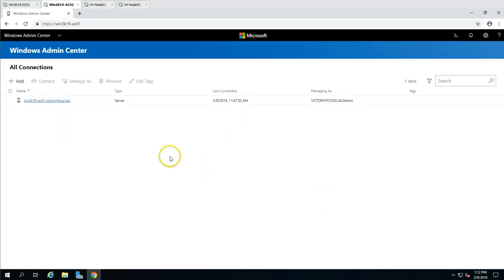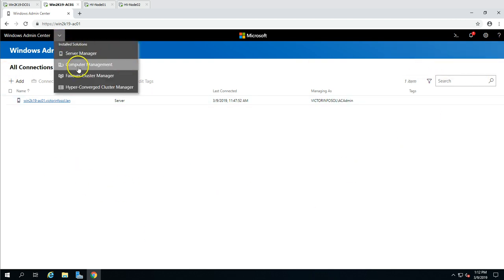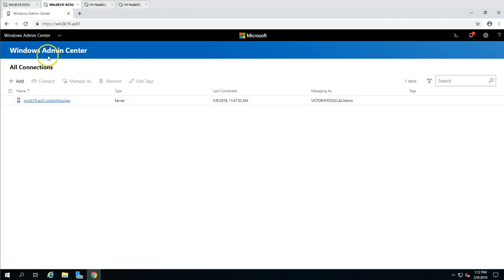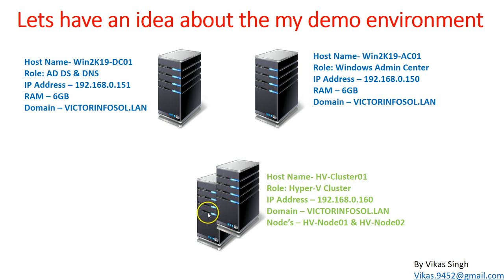I'm now connected to Windows Admin Center. From here we can manage computers and failover clusters, so we are going to add our Hyper-V failover cluster here. The next thing we have is our failover cluster — a two-node Hyper-V cluster. The cluster name is hvcluster01, with IP address 192.168.0.160, created under vectorinfosol.lan, with two nodes: hv-node01 and hv-node02.